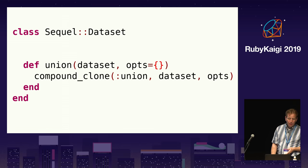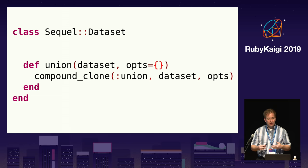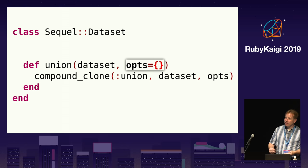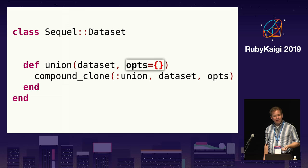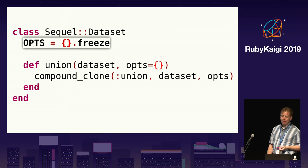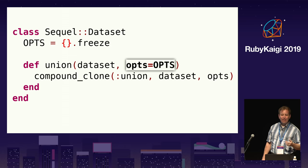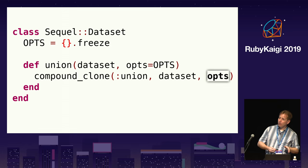Sequel tries to improve performance by reducing hash allocations. Sequel used to have code in many methods where the default argument value was a hash. The problem is that every call with a single argument allocates a hash. Sequel started using an empty frozen hash constant named OPTS, which is used as the default value for most arguments that expect a hash. Using the frozen OPTS hash is almost twice as fast as allocating a new hash. To save allocations, Sequel often passes the OPTS hash directly from one method to another.